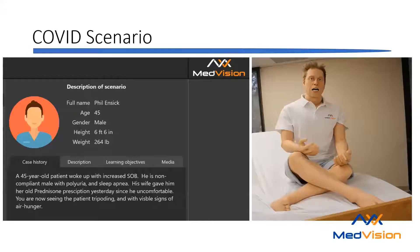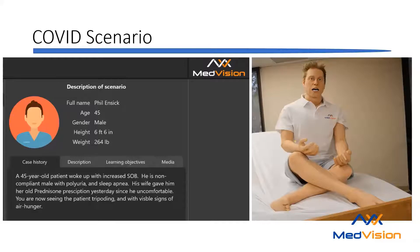Here's our scenario and our introduction. We have a 45-year-old patient who woke up with increased shortness of breath — a non-compliant male who doesn't take his medicines and doesn't see a doctor regularly. Polyuria — he's peeing all the time. He's got some sleep apnea. He's on BiPAP at night, or at least he's supposed to be. His wife gave him some prednisone prescription she had left over, thinking that would make him feel comfortable as he sounded a little wheezy. She teaches school health so she wanted to help. You're seeing the patient — he's now tripoding in the bed. This is our guy, Phil.